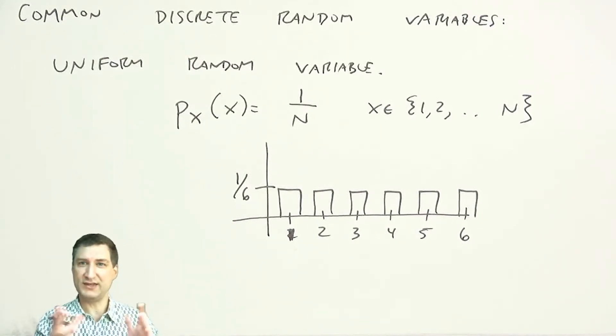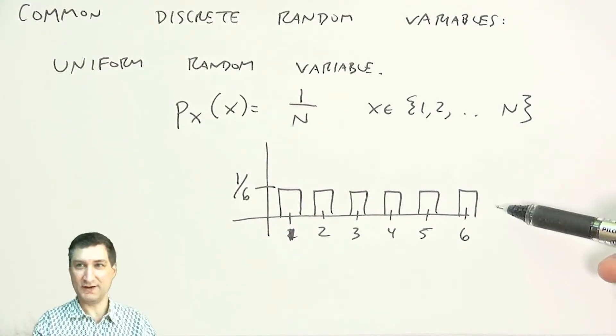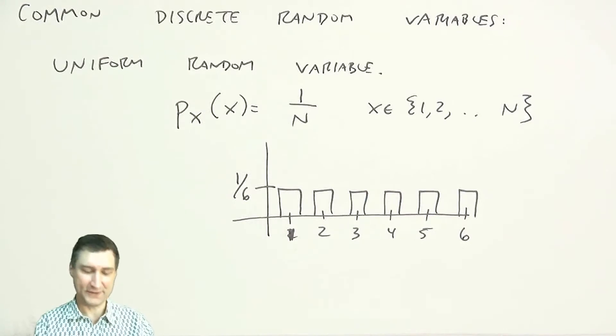And remember we did this kind of numerical experiment a few lessons ago where I was plotting these bars, except it wasn't the actual PMF, it was like the observed frequency of things, and what we know now is that if I look at enough experiments, that bar graph of actual outcomes should eventually converge to the underlying PMF.